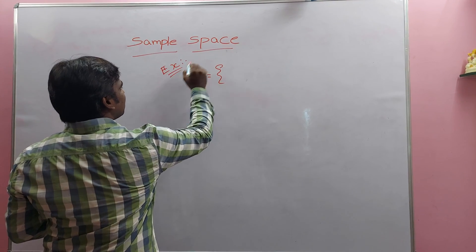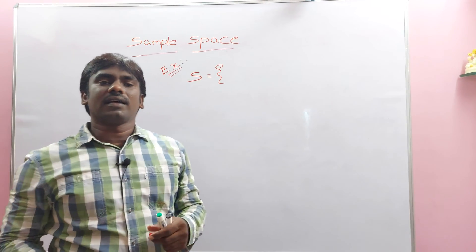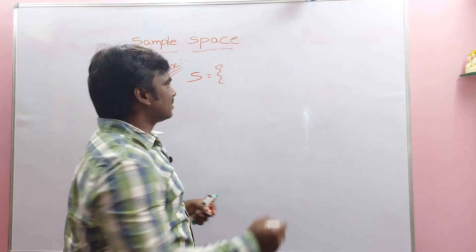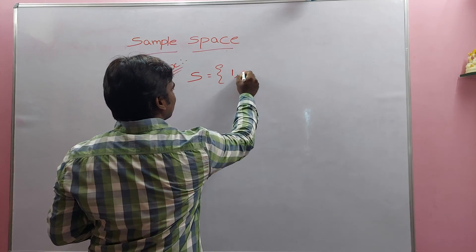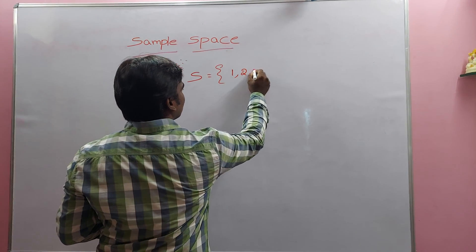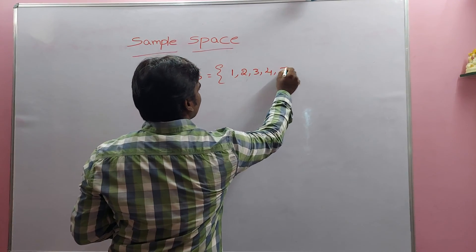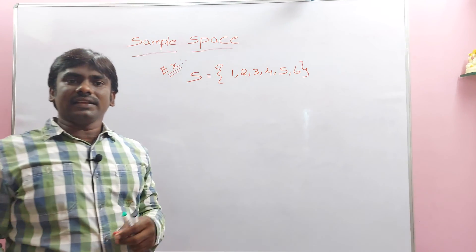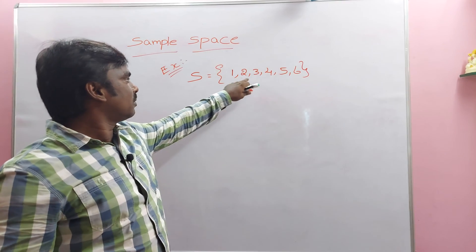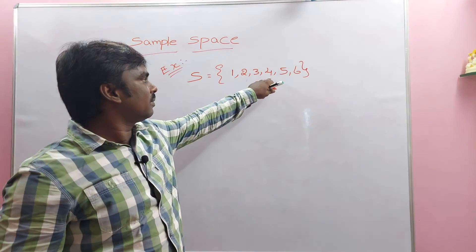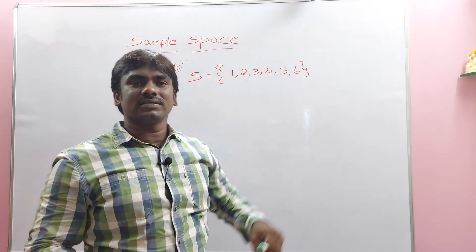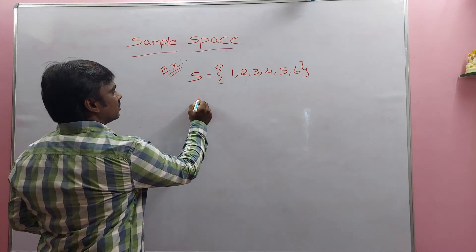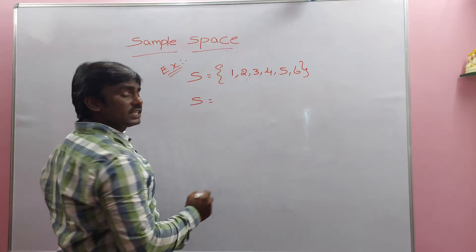Example for sample space: when you roll a die, what is the sample space? The sample space is {1, 2, 3, 4, 5, 6}.